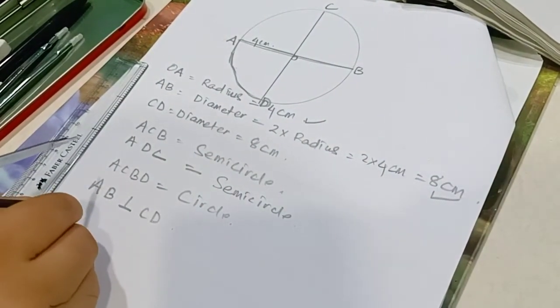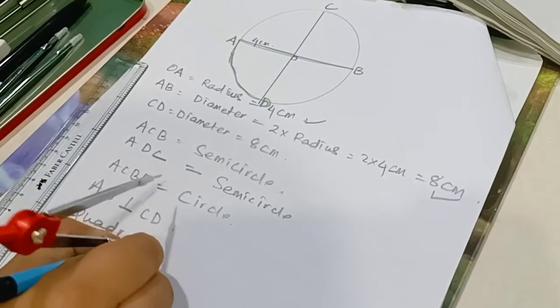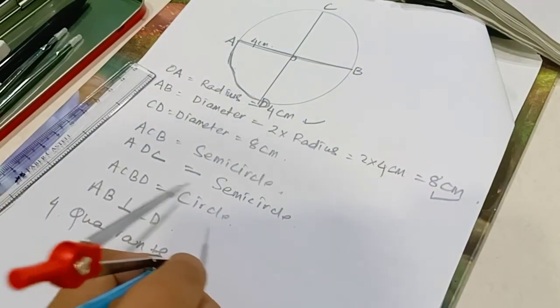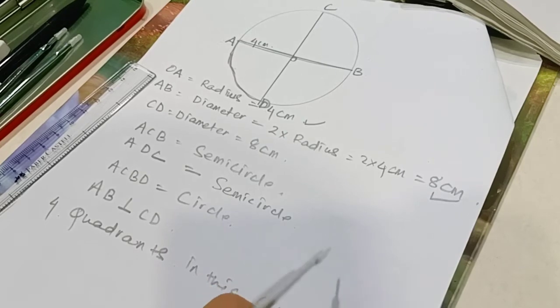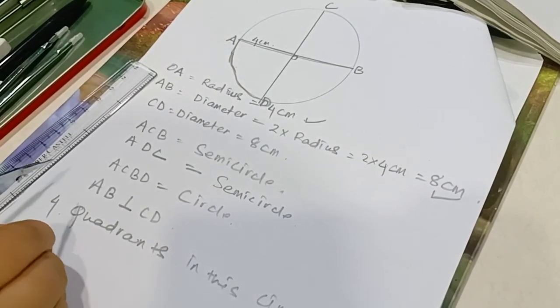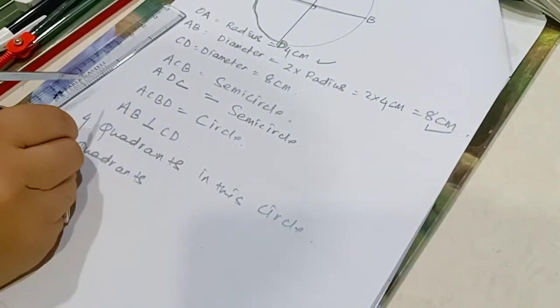This figure is called quadrants. Four quadrants, 4 quadrants in this circle. Quadrants are 4 quadrants.